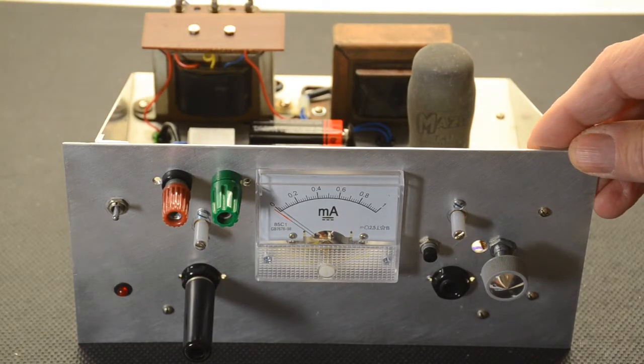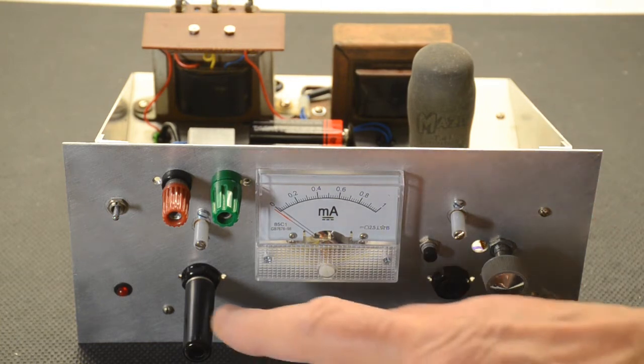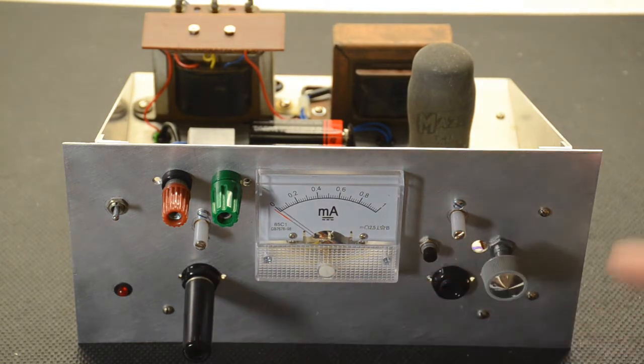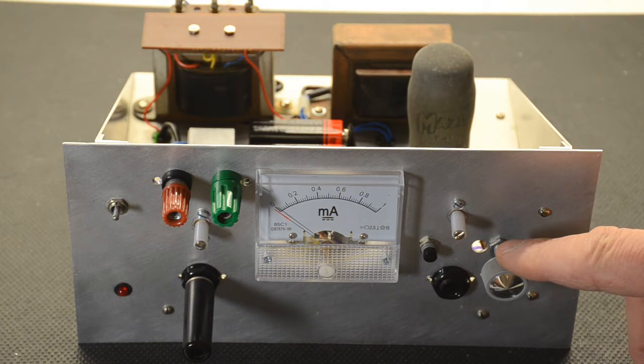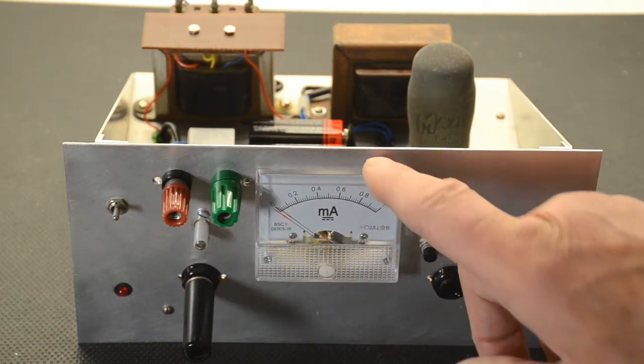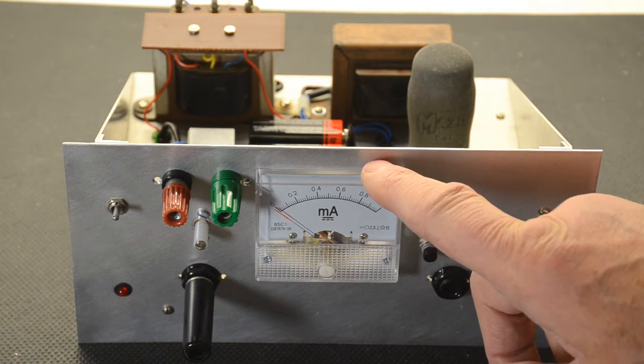Here we have our completed project, quite a simple one on this occasion. We'll be using this socket here as our output, and this will be the bias adjustment for the Thyratron. None of the other things work of course other than the on-off switch and the meter that will show the current it takes.